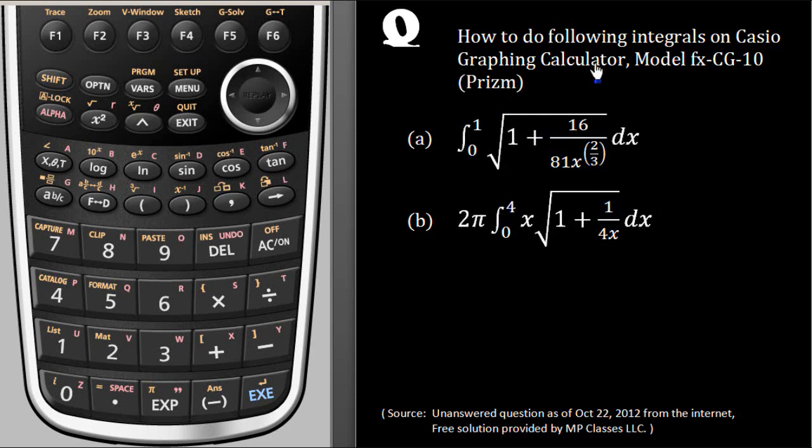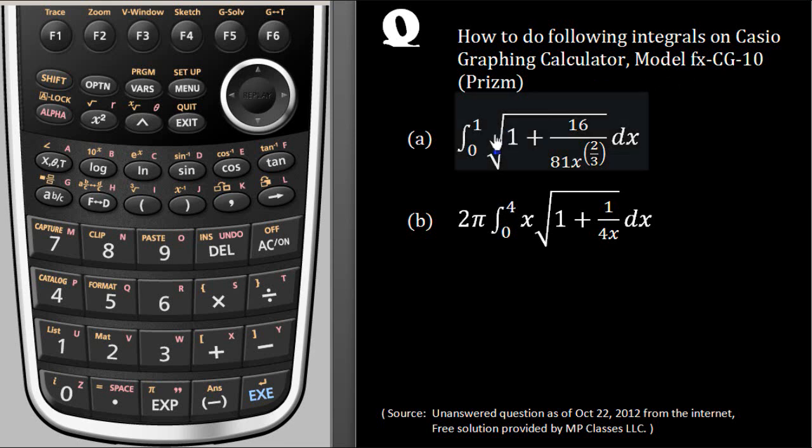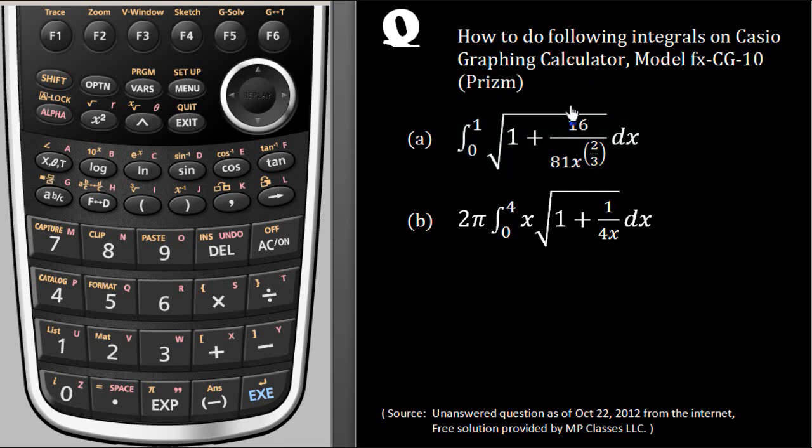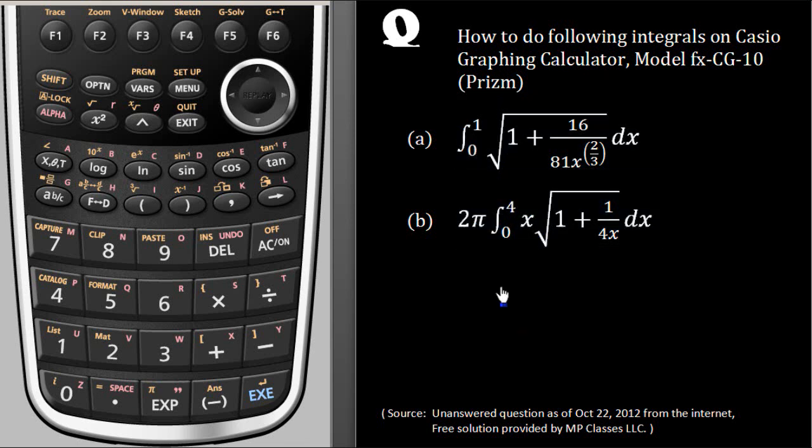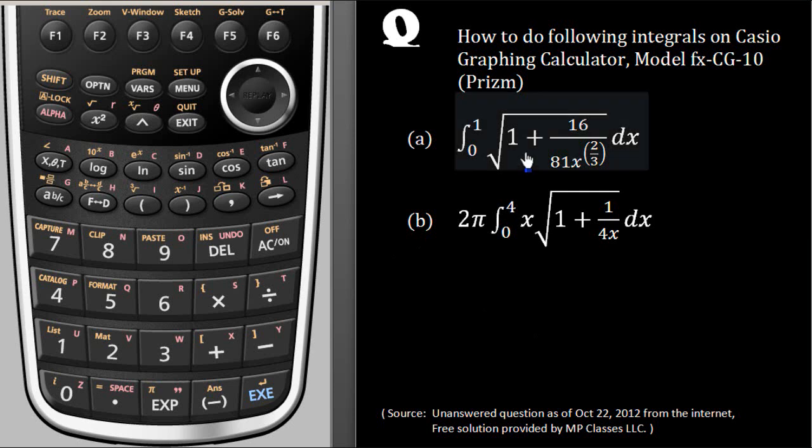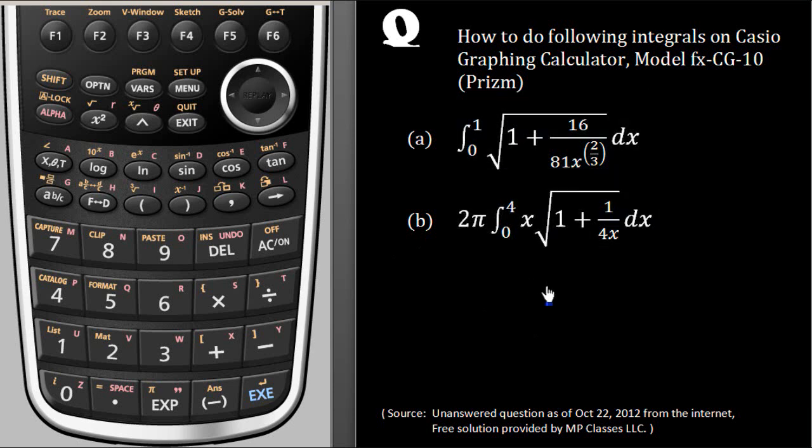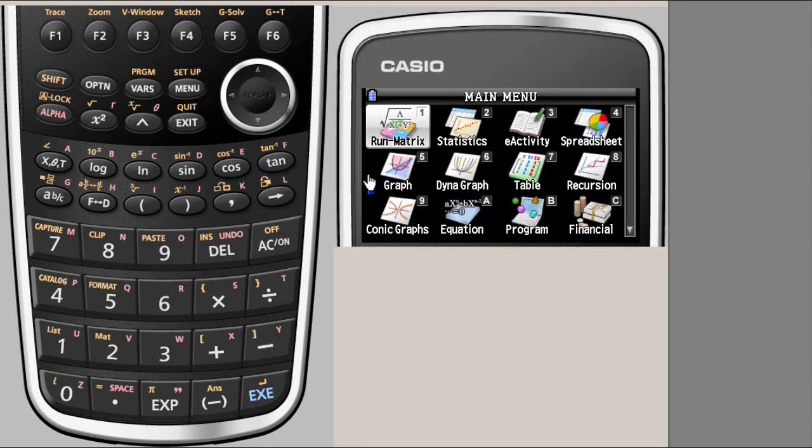Using Casio Prism model fx-cg-10, a graphing calculator, to solve two definite integrals. Remember that a definite integral is a real number on a real line, at least for high school students, so the value you're looking for is going to be a number.